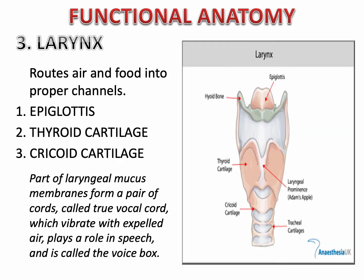Next is the larynx, which routes air and food into proper channels. We have three cartilages: the epiglottis cartilage, the thyroid cartilage, and the cricoid cartilage. The epiglottis is called the guardian of the airways. Whenever we swallow, food and fluid enter the esophagus instead of the larynx because the epiglottis closes automatically.